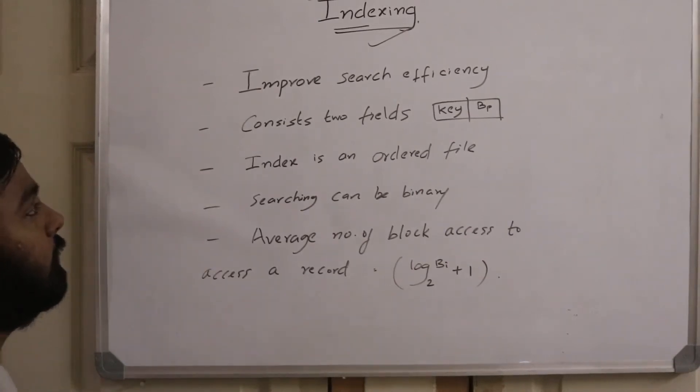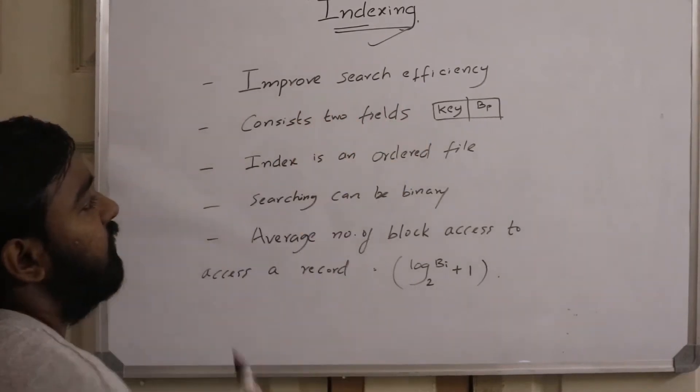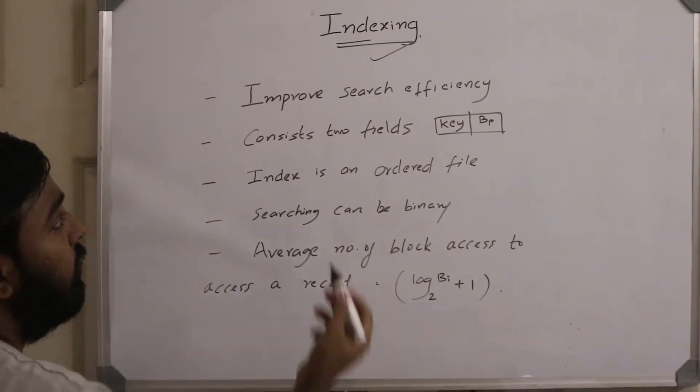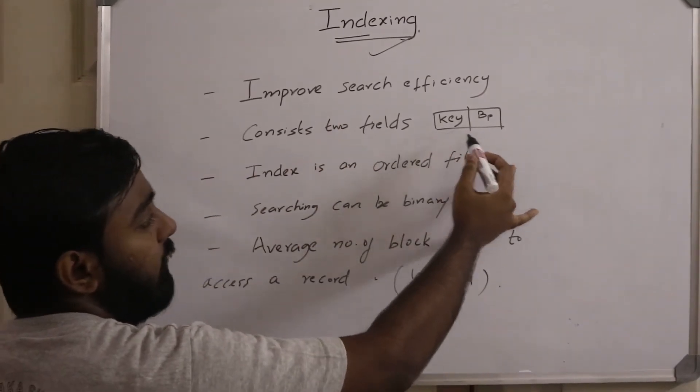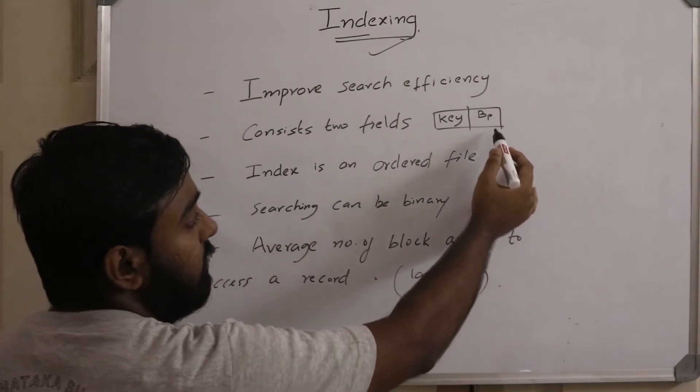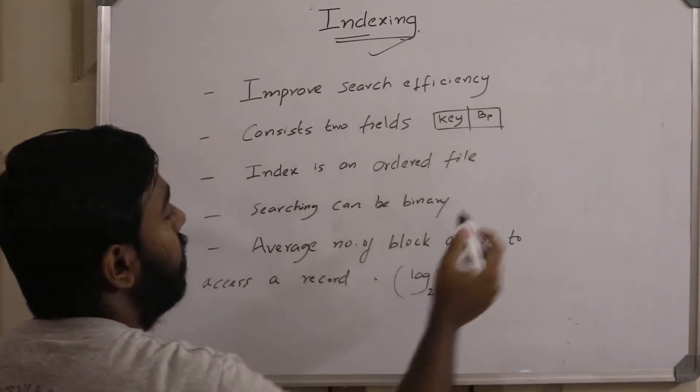So this is what we have seen so far. First, as you know, indexing improves search efficiency. The next point is that an index file consists of two fields: the first one is the key on which we have applied an index, and the second one is the block pointer, which points to the block.